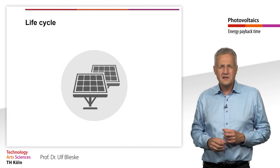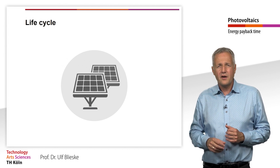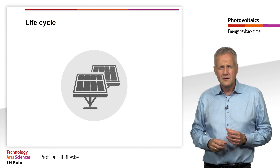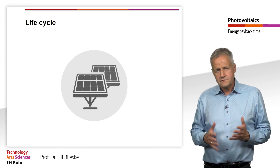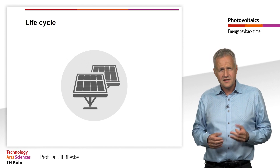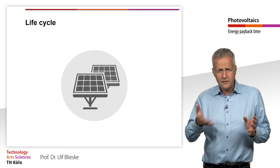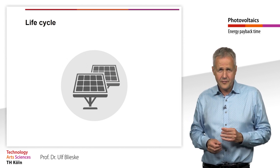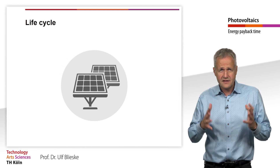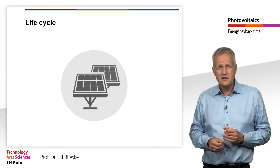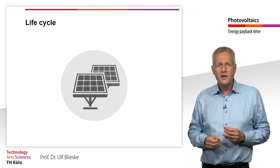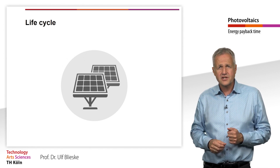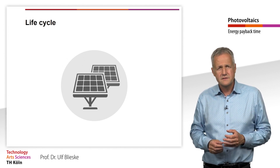One possibility is to draw up a life cycle analysis. This considers the entire life cycle of a PV system so that indirect environmental impacts — such as energy used for production or the use of raw materials in production — are also taken into account.